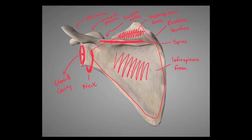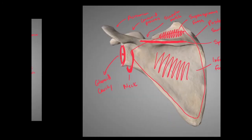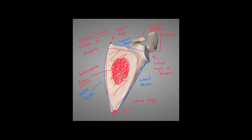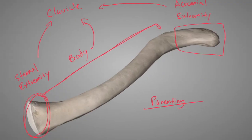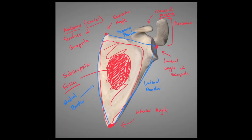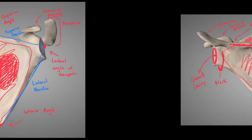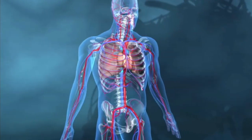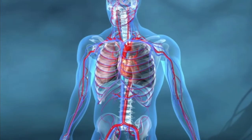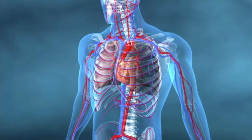So now you know the landmarks for the scapula — both posterior and anterior aspects — as well as the landmarks on the clavicle. That's all we're going to cover in this video. In the next video, we'll be covering the rest of the bones in the superior limb. Thank you.